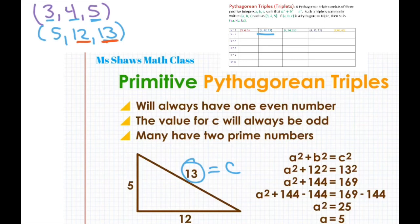Let's try 7, 24, 25. All right. The value for c, which is this number, is odd. We have one even, but we only have one prime number. And then you can go on and on. So that's called primitive Pythagorean triples.